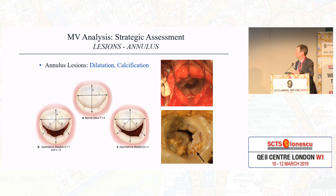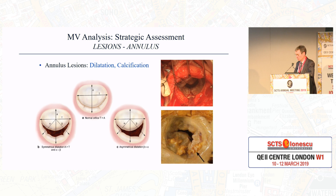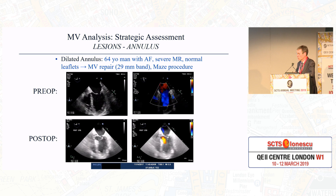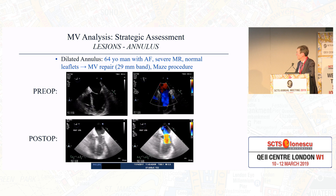Annular lesions can involve dilatation or calcification of the mitral valve annulus. You can have symmetrical dilatation as seen with a dilated cardiomyopathy, or asymmetrical dilatation more often seen with an ischemic etiology. Here's an example of a 64-year-old gentleman with atrial fibrillation and severe mitral regurgitation with normal leaflets. He had a mitral valve repair with a 29-millimeter band and a maze procedure, which fixed the dilated annulus and eliminated the regurgitation.